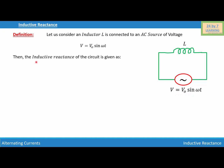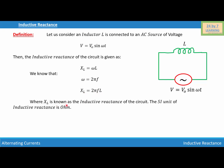The inductive reactance of the circuit is given as XL equal to ωL, where L is the inductance, ω is the angular frequency, and XL is the inductive reactance. We know that ω equals 2πf, where f is the frequency. Substituting the value of ω, we get XL equal to 2πfL, where XL is the inductive reactance of the circuit.